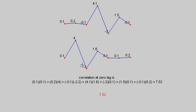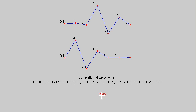To calculate the correlation at zero lag, we follow the same process as seen in earlier videos: we multiply the vertically aligned samples and then sum the results of each of those multiplications. So we have 0.1 multiplied by 0.1, added to 4 multiplied by 0.2, added to minus 2.2 multiplied by minus 0.1, and so on. All those calculations are shown below, with a numerical result of 7.52 — so at zero lag, the correlation measure is 7.52.